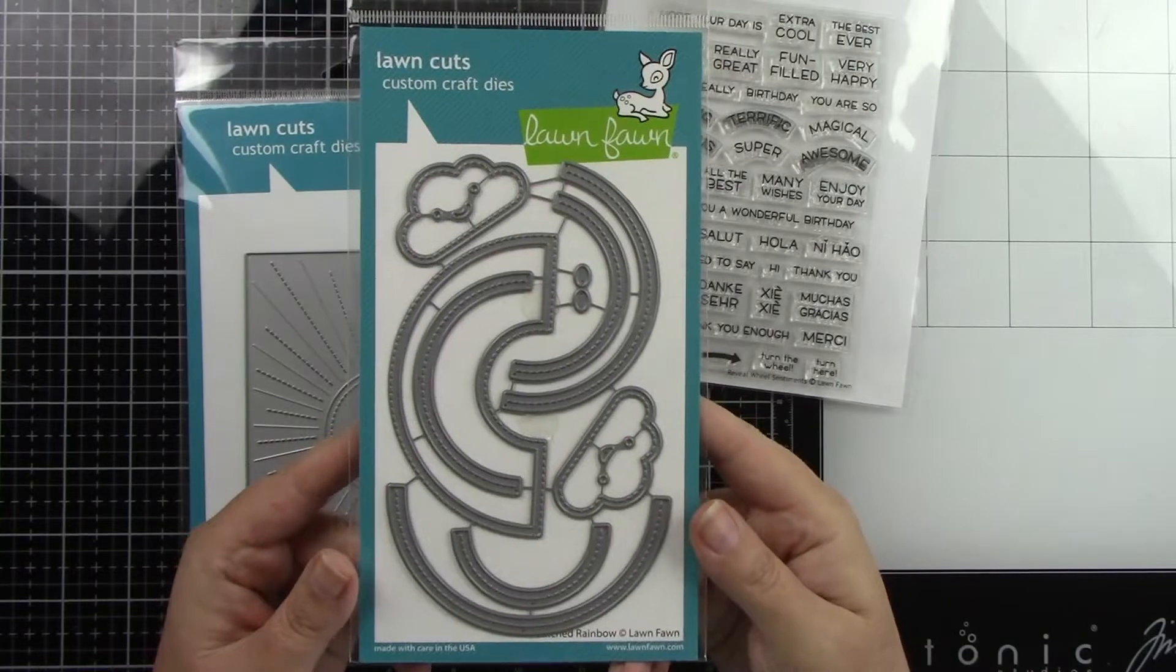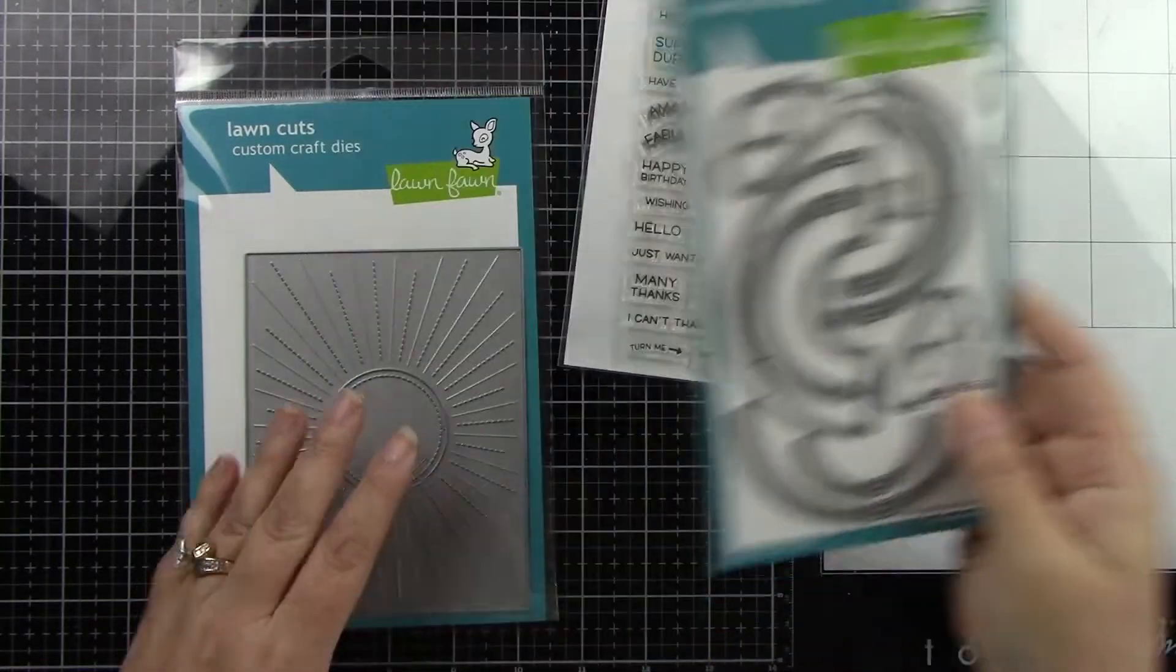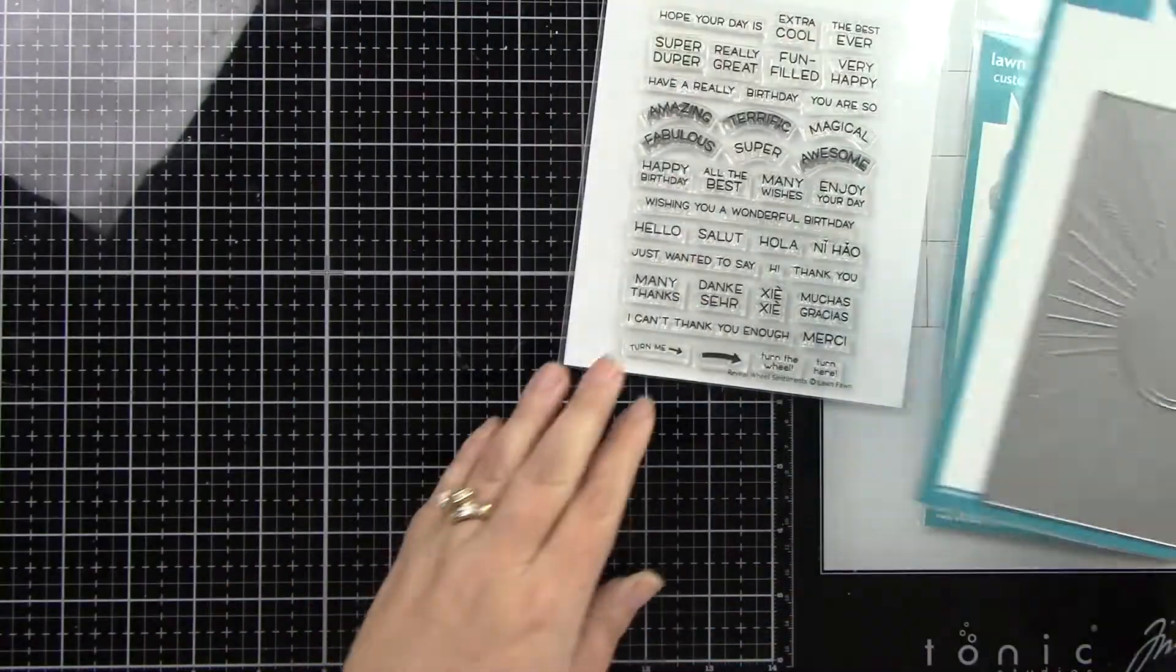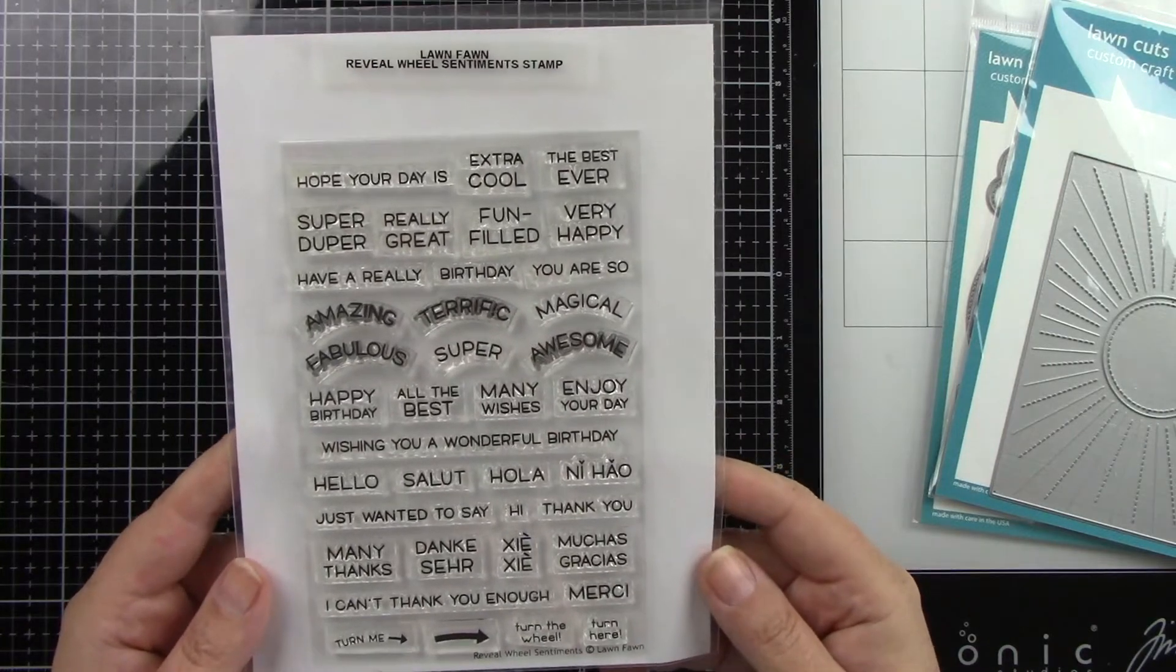Now here are the products. Here's that Stitched Rainbow Die, super cute. And then the Sunburst Backdrop, which is going to make a fantastic background. And then the Reveal Wheel Sentiments—we're going to use a few of those.